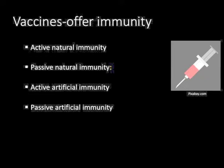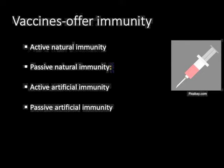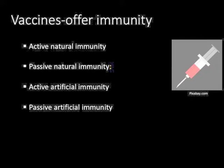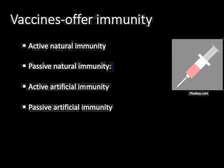Passive natural immunity is from mother to fetus. For example, the mother had the mumps as a child and passes her antibodies to the fetus through the placenta. This protects the infant, if exposed to mumps, for three to six months.